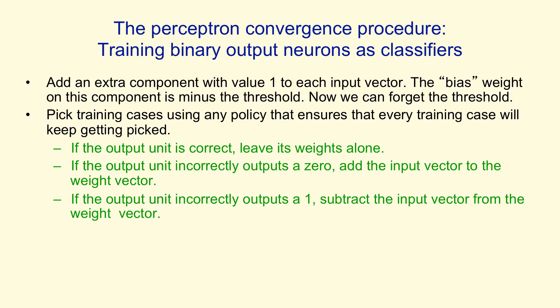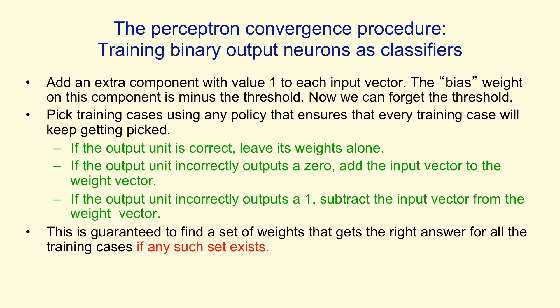Conversely, if the output unit outputs a 1 when it should have output a 0, we subtract the input vector from the weight vector of the perceptron. And what's surprising is that that simple learning procedure is guaranteed to find you a set of weights that will get the right answer for every training case.